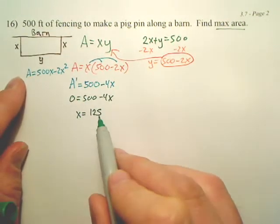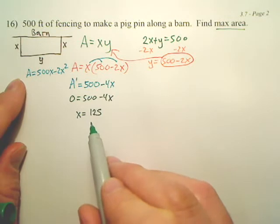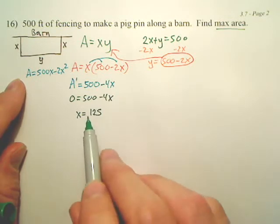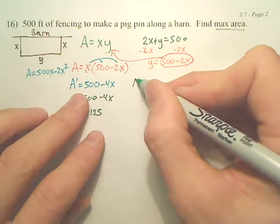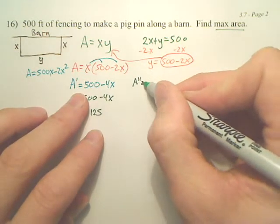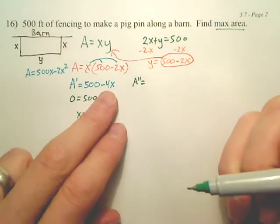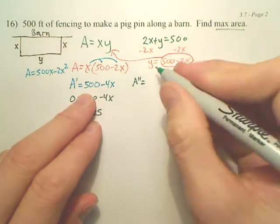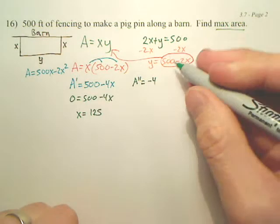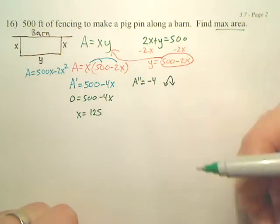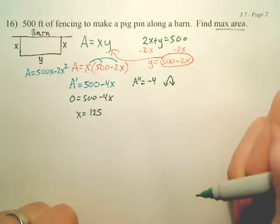So, that is saying my answer is 125, but we have to make sure that's a maximum. Now, to make sure it's a maximum, we need to find a double prime. What's a double prime? Negative 4.